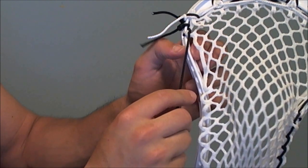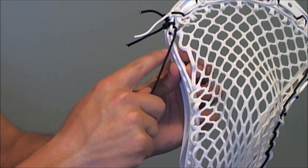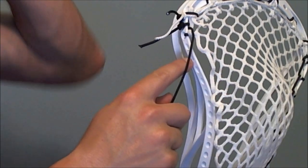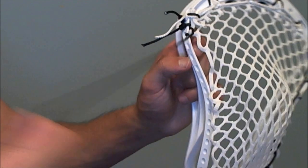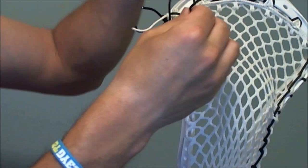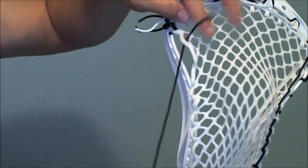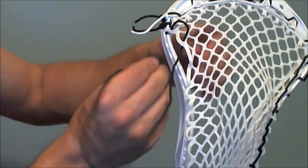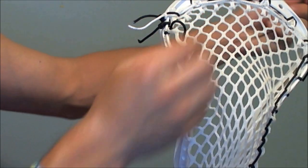Then we're going to SI the second 10 diamond row of mesh down to the next sidewall hole, having skipped one, so we're going to skip number five and go down to number six. So again, go down through the back of the mesh, in through the outside of the sixth sidewall hole.